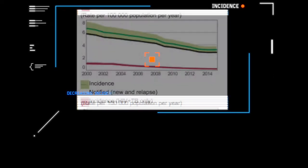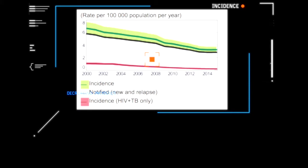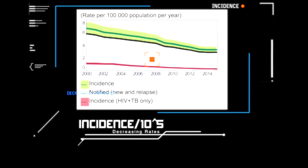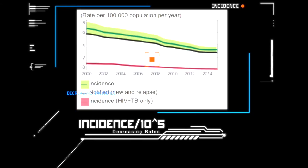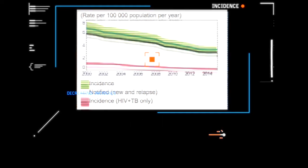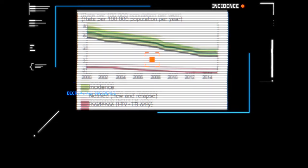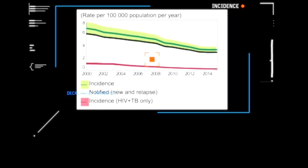Next, we have the incidence rate of tuberculosis per 100,000 population per year. As you can see, it mirrors the mortality rate — the incidence rate has decreased over the years, within a span of about 15 years or so.